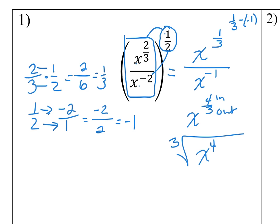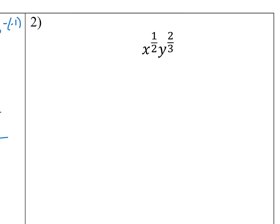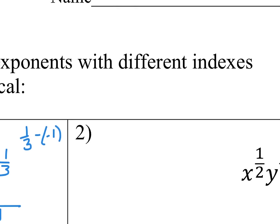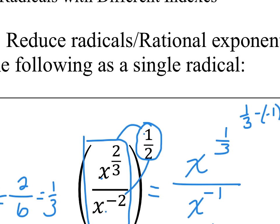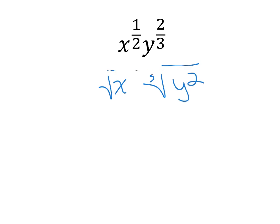That's really the big deal of today. For this next one, you have to remember that 1 is the same as 6 over 6. I want to write this as a single radical. If I wrote each one as a radical it would be the square root of x and the cubed root of y squared — that doesn't help me.